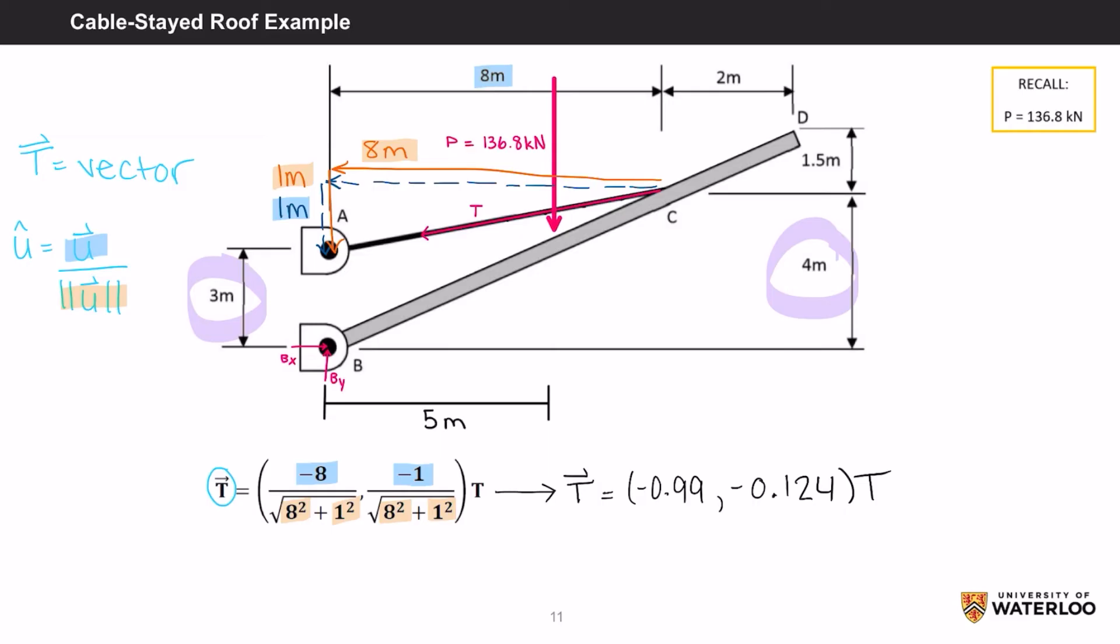Remember that we have to multiply by T as we're solving for the tension in the cable. So overall, we end up with the directional component of the vector and wherever the tension in the cable is. To simplify this even further, we can treat Tx as negative 0.99t and Ty as negative 0.124t.